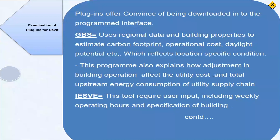The two main plugins are GBS — Green Building Studio — and IESVE. GBS uses regional data and building properties to estimate carbon footprint, operational energy, daylight potential, and other metrics that reflect location-specific conditions. This kind of regional specificity is often not available in standalone LCA software like Simapro, which is based on European standards. For example, if a project is in India, GBS can provide relevant local material energy data.